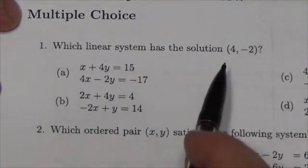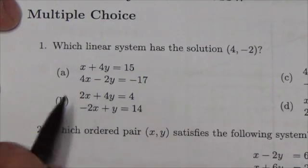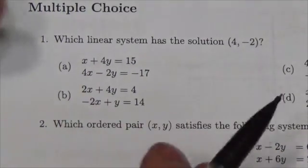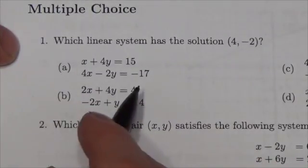Now remember what this is. This is an ordered pair, so this is an x-coordinate, this is a y-coordinate, and when we say a system has that solution, what we mean is that point satisfies both equations simultaneously.